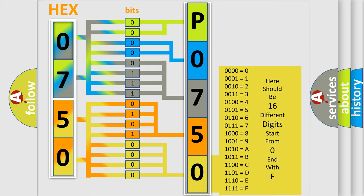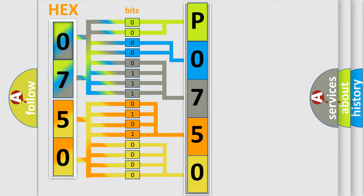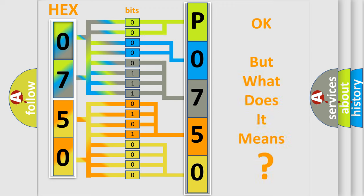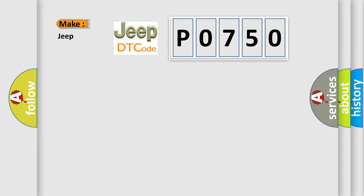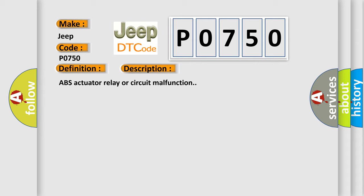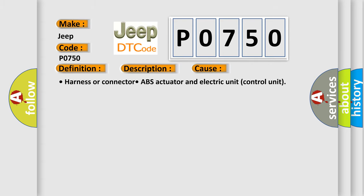We now know how the diagnostic tool translates received information into a more comprehensible format. The number itself does not make sense if we cannot assign information about what it actually expresses. So, what does the diagnostic trouble code P0750 interpret specifically for car manufacturers? The basic definition is: Actuator Relay. This is a short description of this DTC code: ABS actuator relay or circuit malfunction. This diagnostic error occurs most often in these cases: harness or connector, ABS actuator and electric unit control unit.